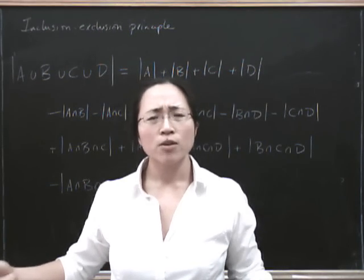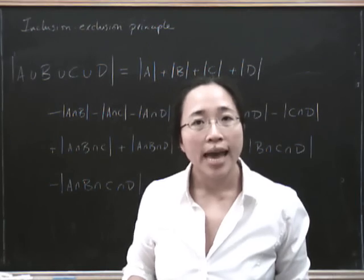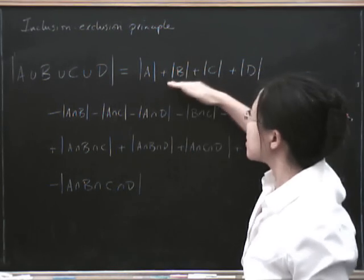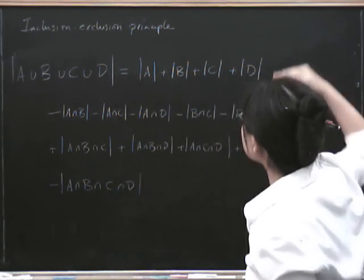But the final question you might ask about this is, why is it called the inclusion-exclusion principle? Well, it's kind of because you keep alternating between adding and subtracting things.